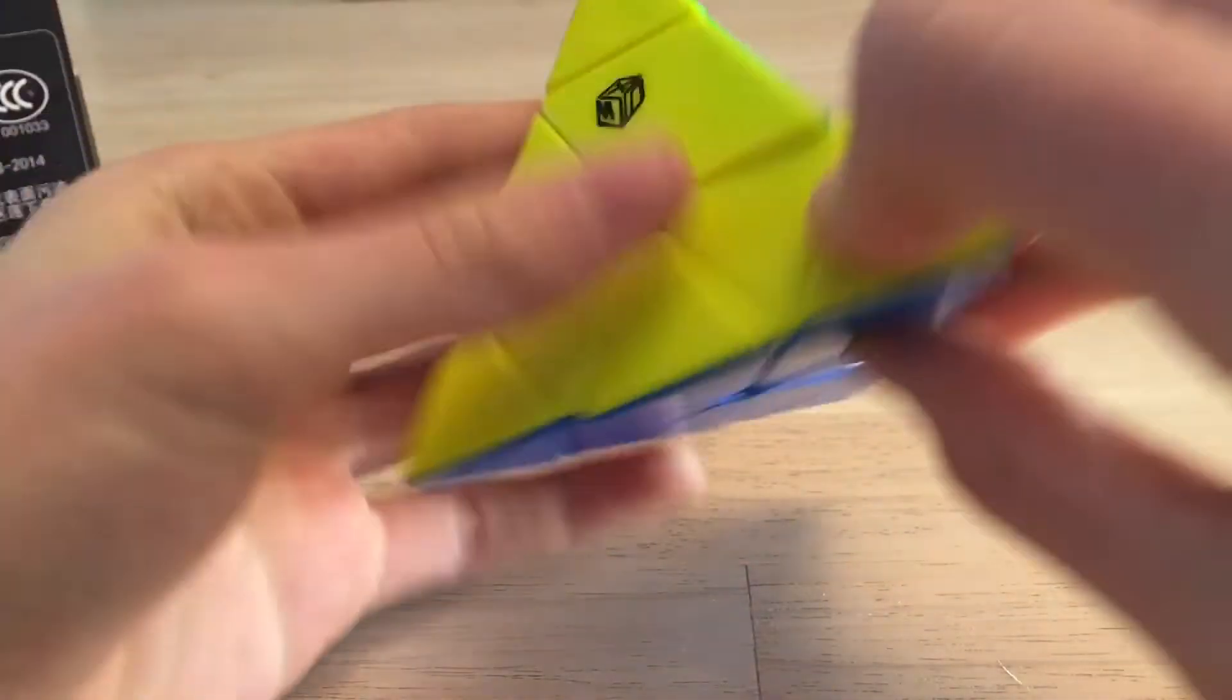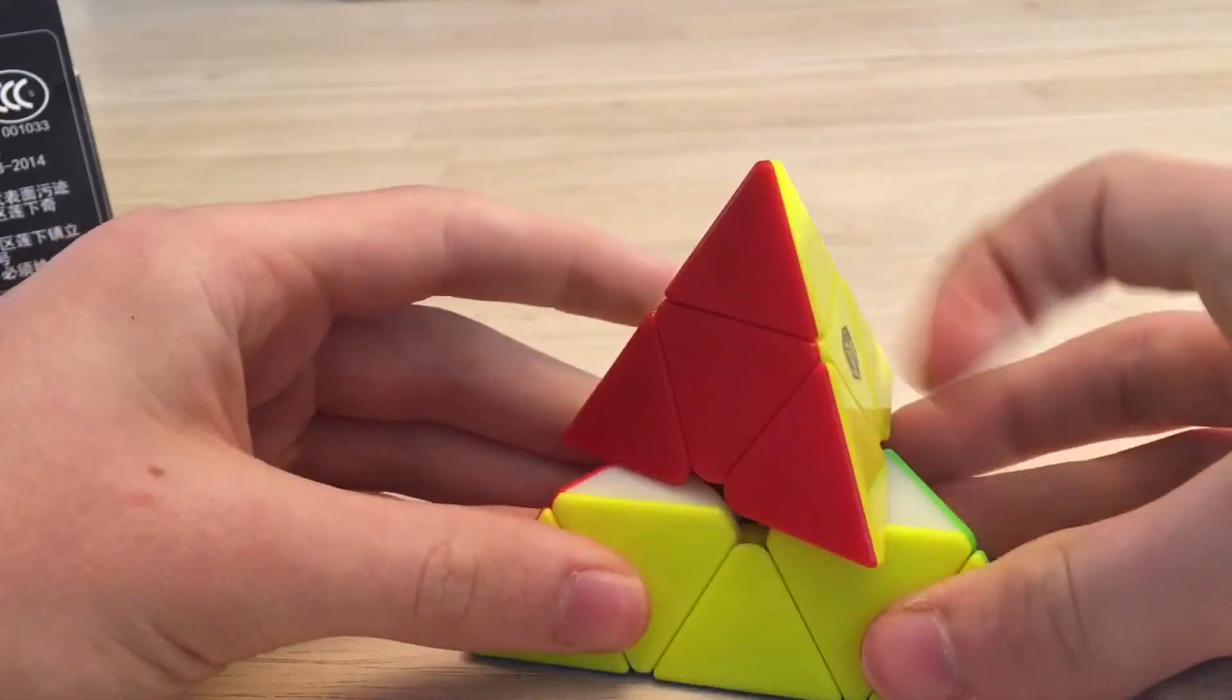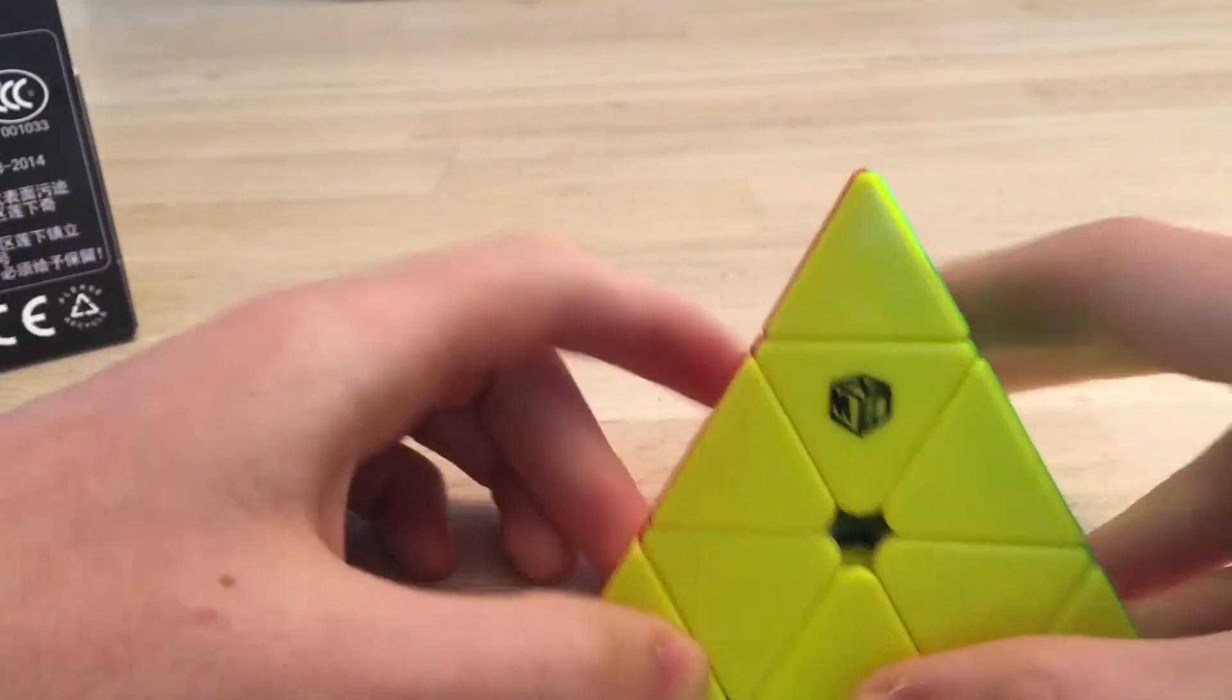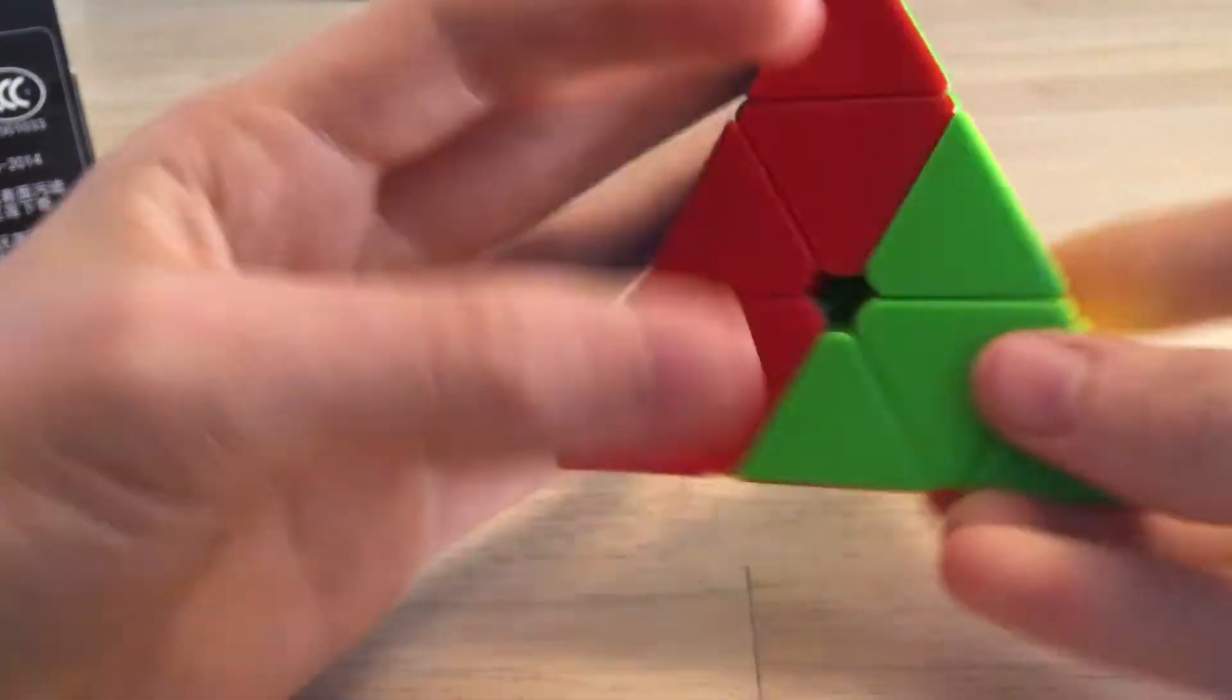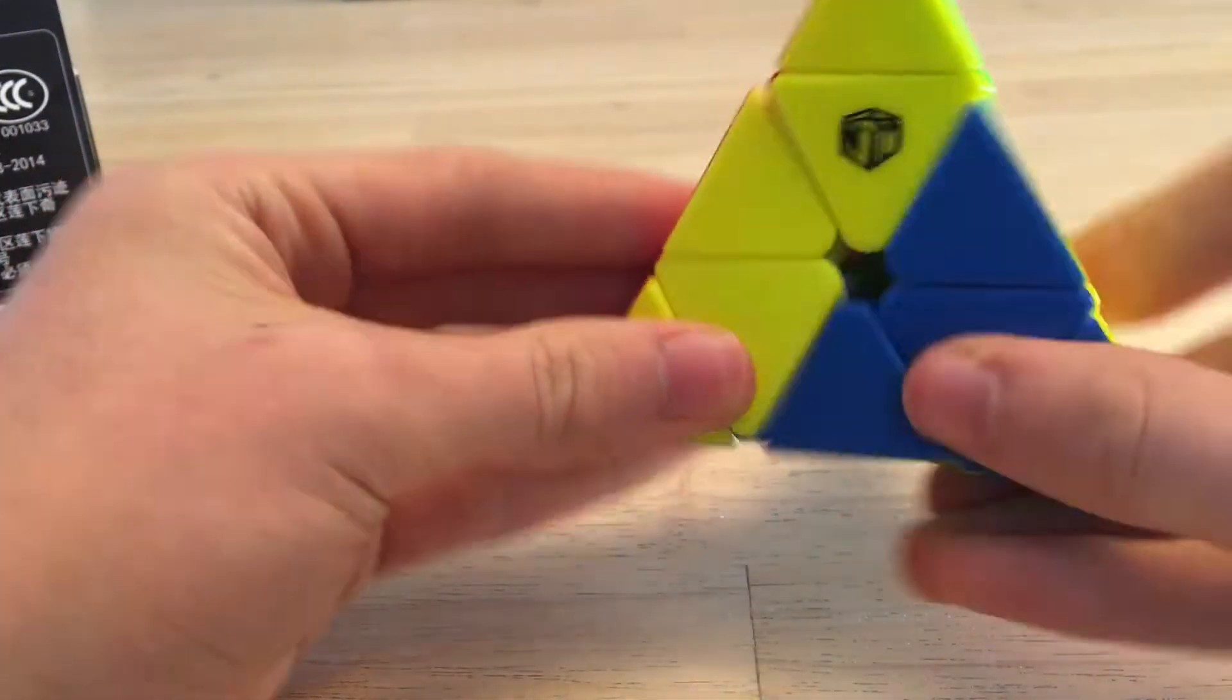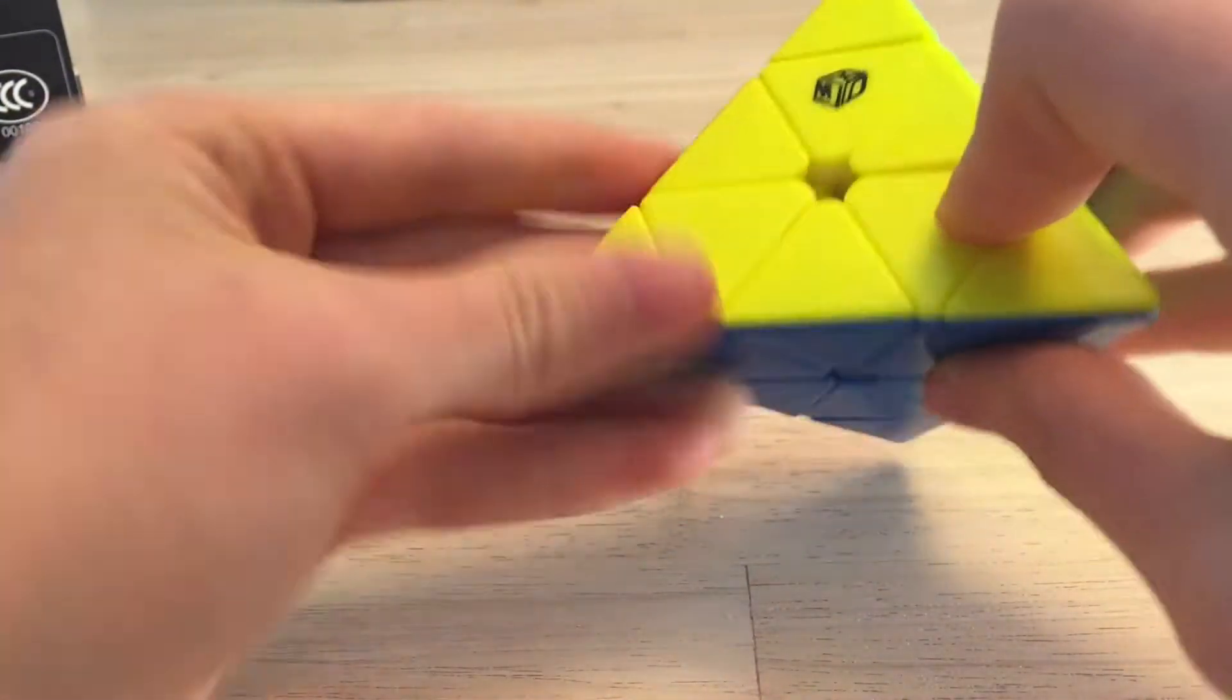I don't want to be too harsh on it because the only other Pyraminx I've tried was a Speed Cube Shop cosmic cube. It was PVC coated, really nice. I think my friend spent like 75 bucks on it or something. But for 13 bucks, I'd say this is a really decent Pyraminx right here.